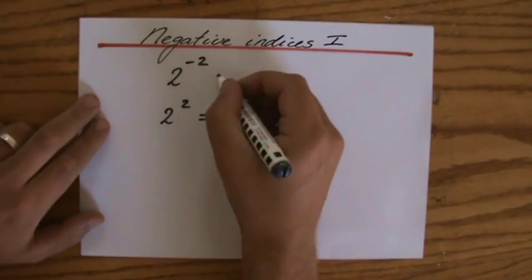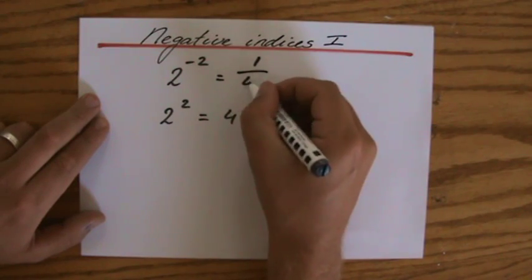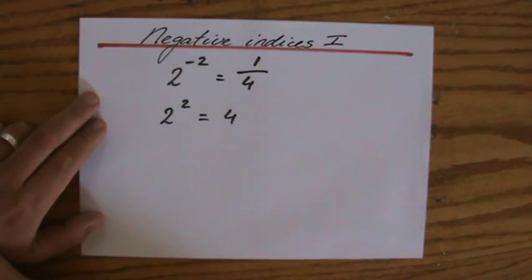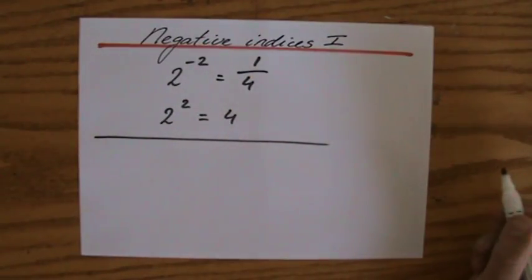2 to the power minus 2, I'm saying, will equal 1 over 4. I'm going to show you that makes complete sense.